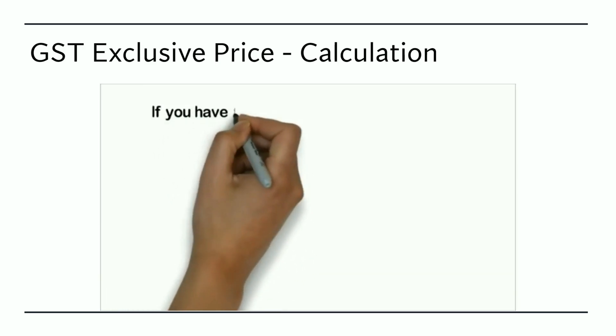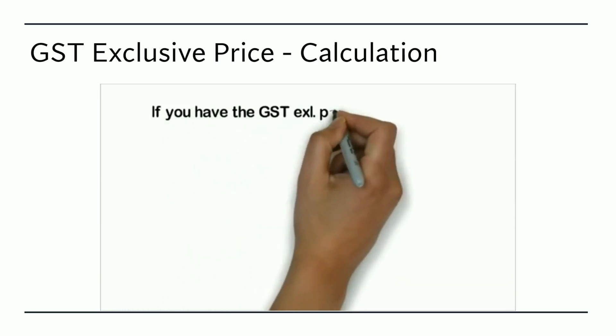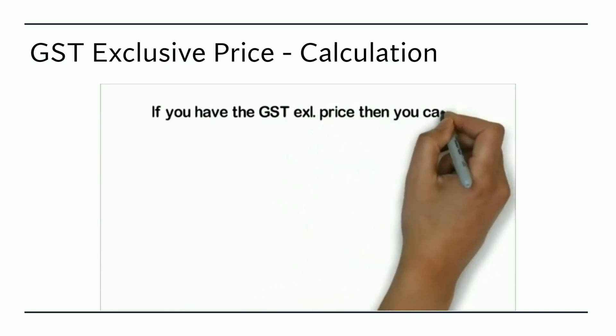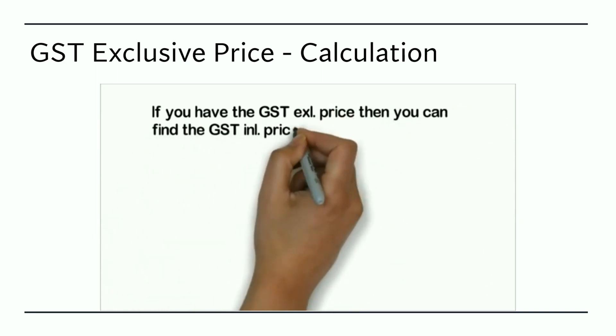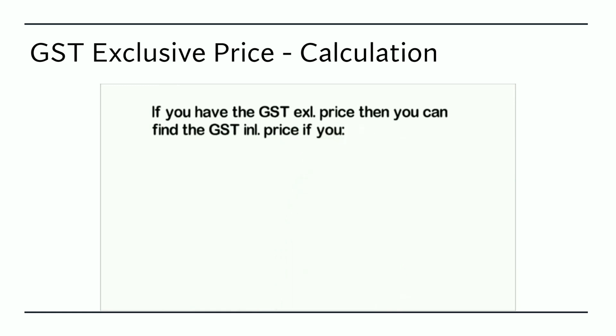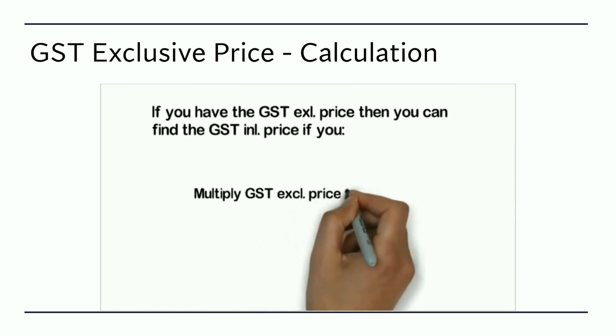If you have the GST exclusive price, meaning that there is no GST included in the figure, and you're wanting to find out how much GST is included, then you need to multiply the GST exclusive price by 1 plus GST.